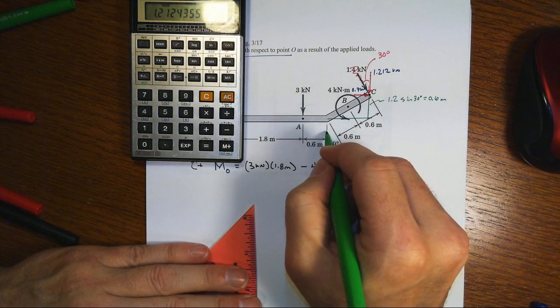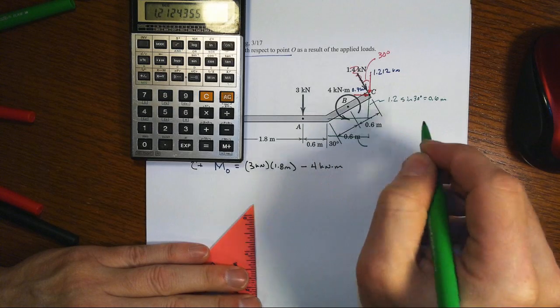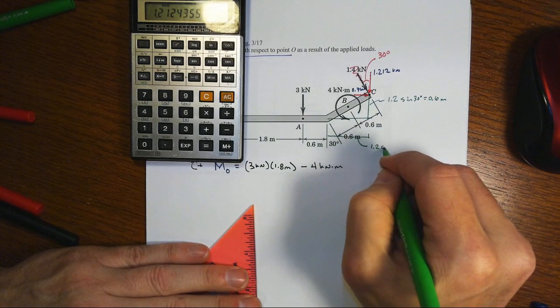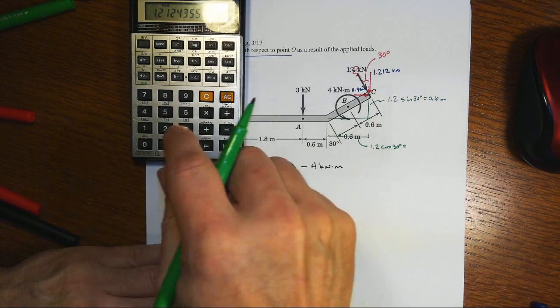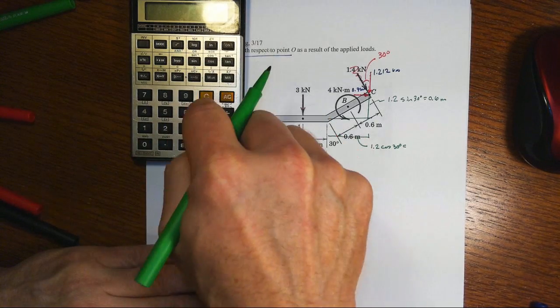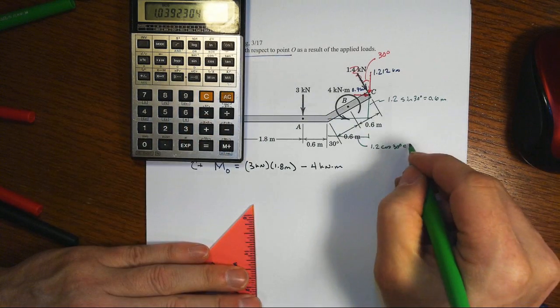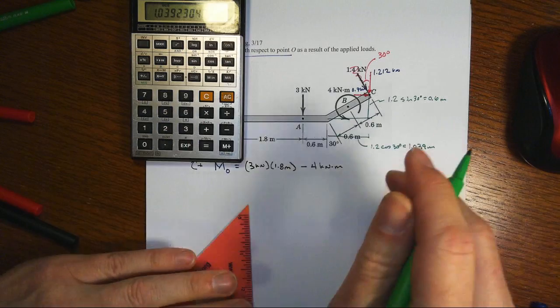And then this base one, that's going to be 1.2 meters times cosine of 30 degrees, or 1.039 meters.